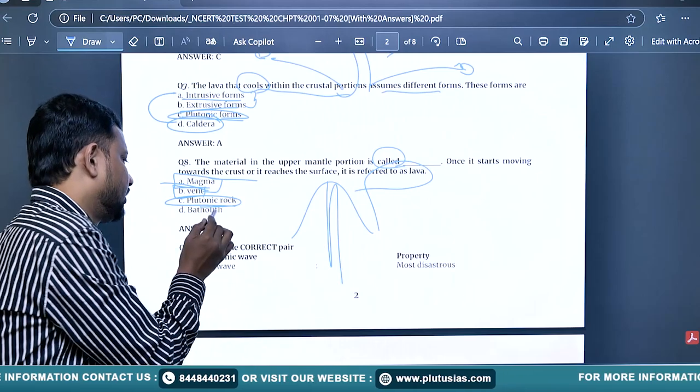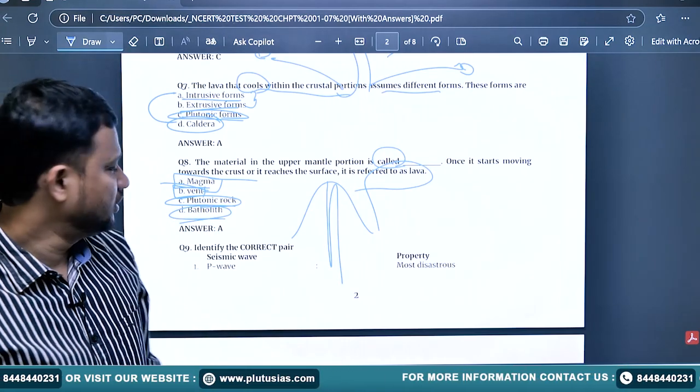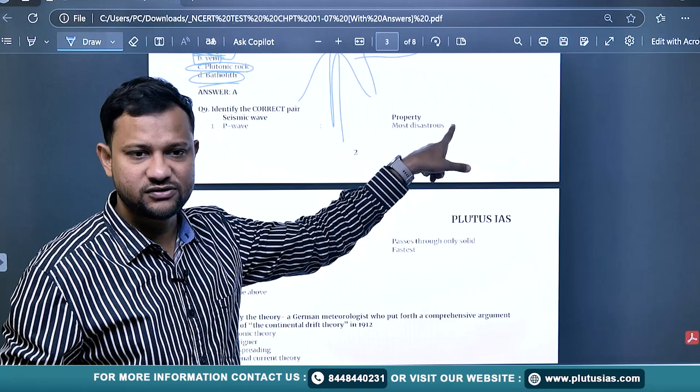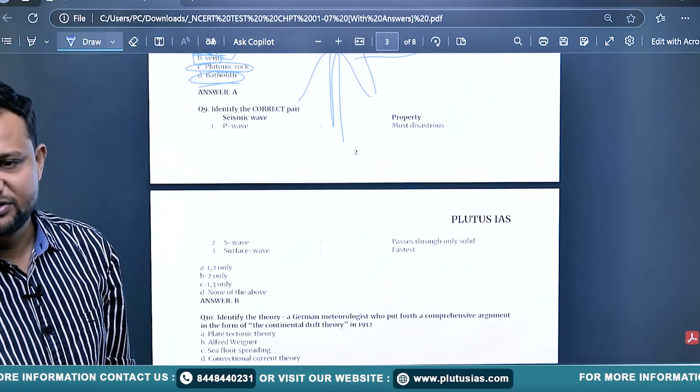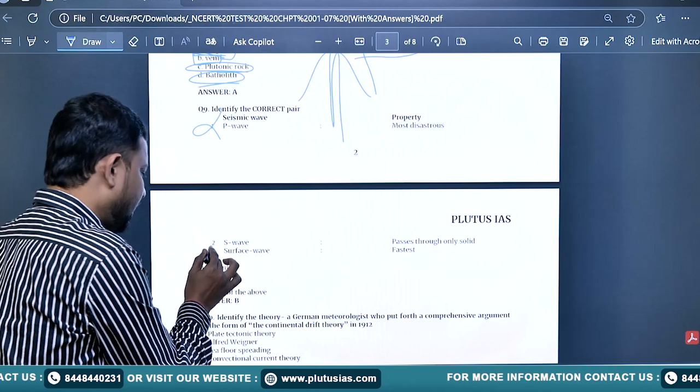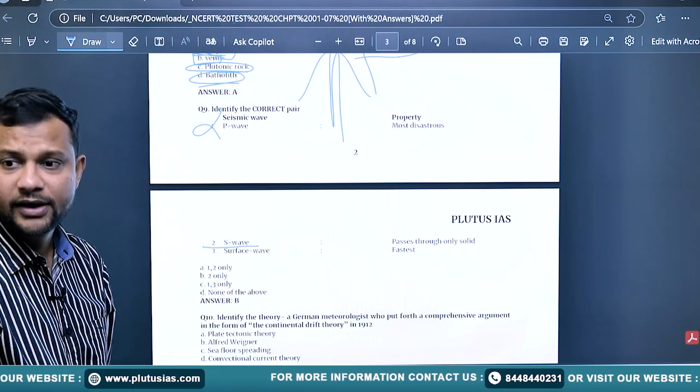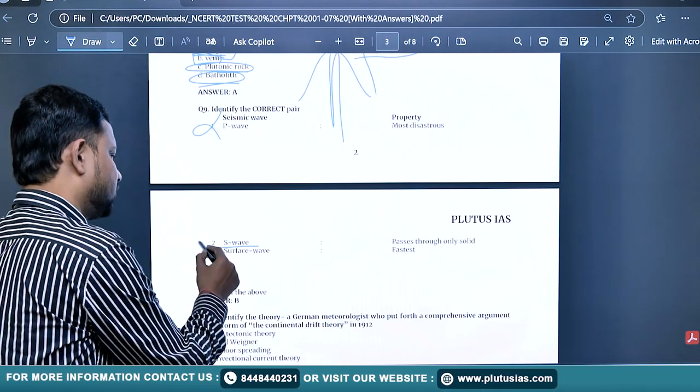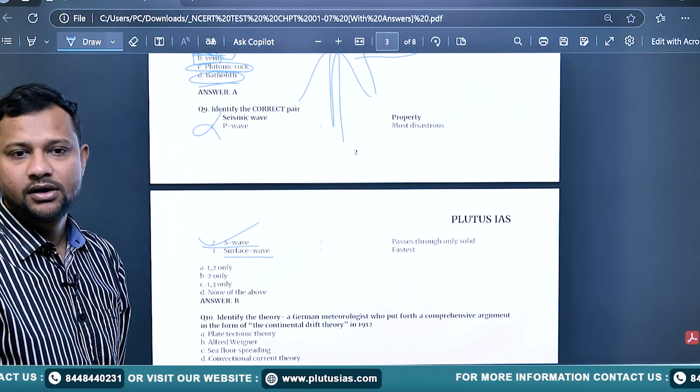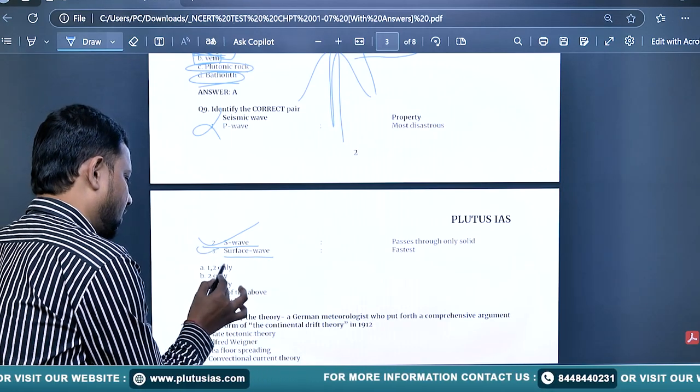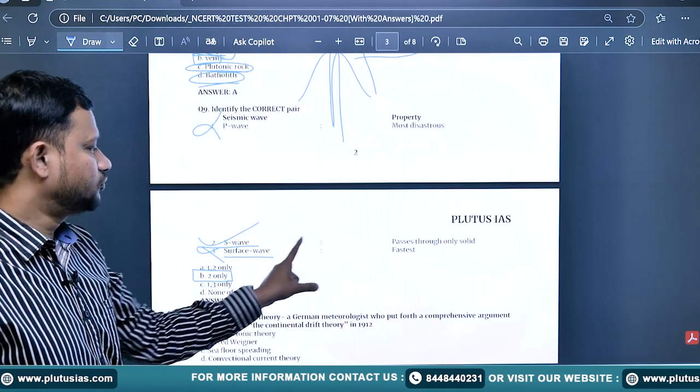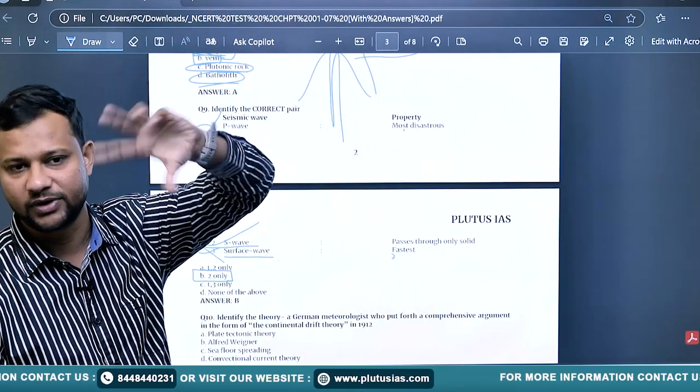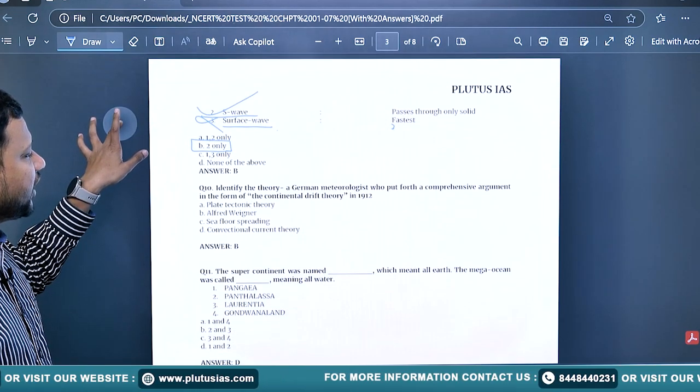Plutonic rocks are at a greater depth. Batholith is also an intrusive rock form. Identify the correct pair: P waves - are they most disastrous? No, they are least disastrous, so the first pair is incorrect. S waves pass through solid only - yes, they can't pass through liquid and gas. Surface waves are the fastest - is it? Answer is two only. Surface waves are the most disastrous or damaging. P waves are fastest, S waves move at moderate speed.